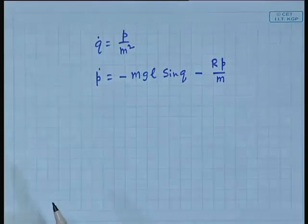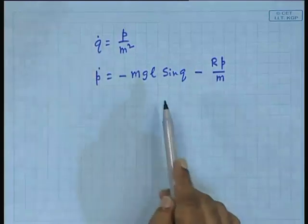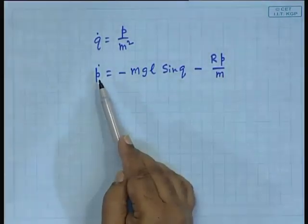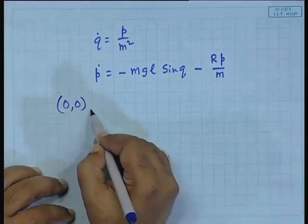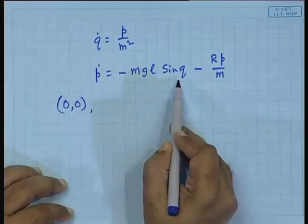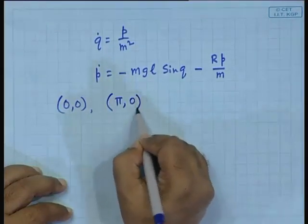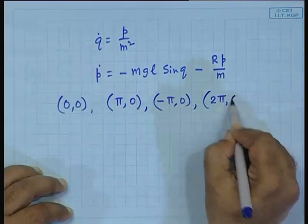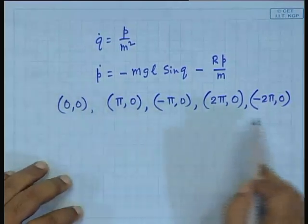Obviously (π, 0) is also an equilibrium point, (2π, 0) is also an equilibrium point. So (π, 0), (−π, 0), (2π, 0), (−2π, 0) — all these are equilibrium points and there are an infinite number of them. The next question is: is the behavior around each equilibrium point the same? Let us check that.